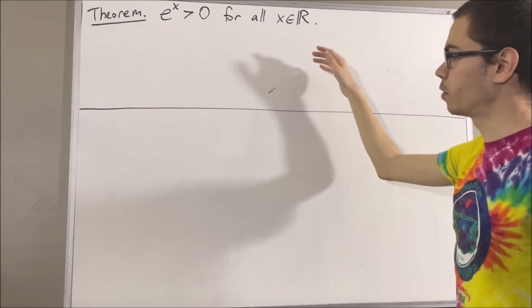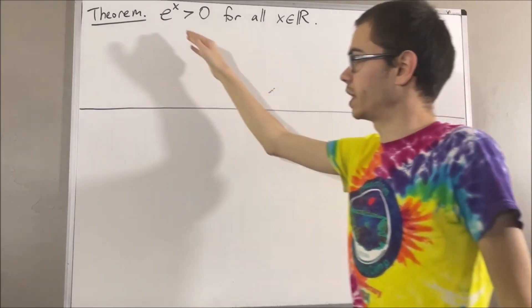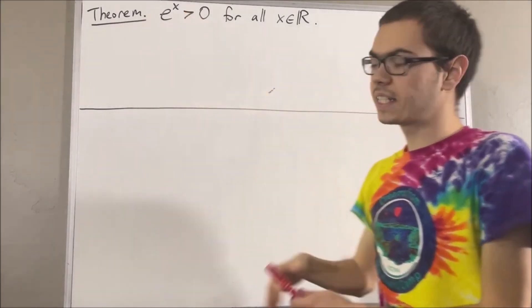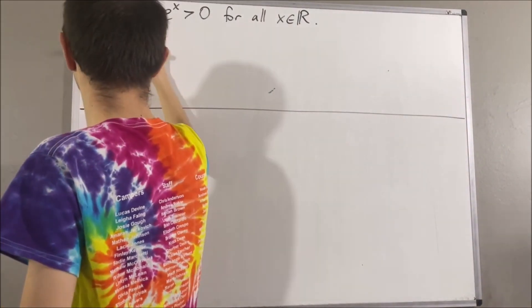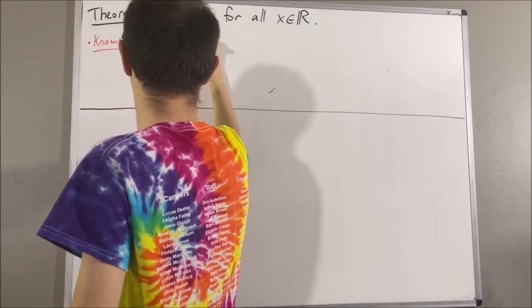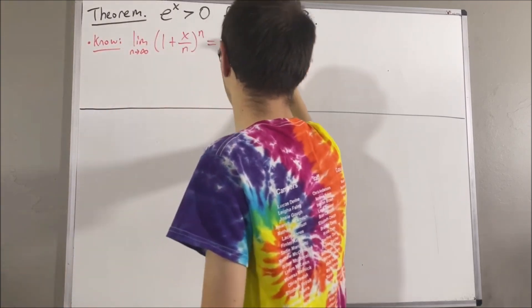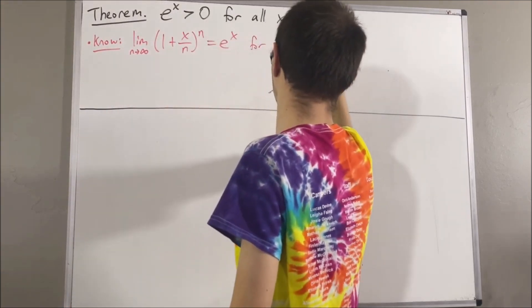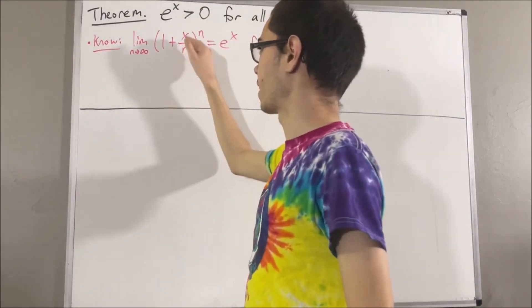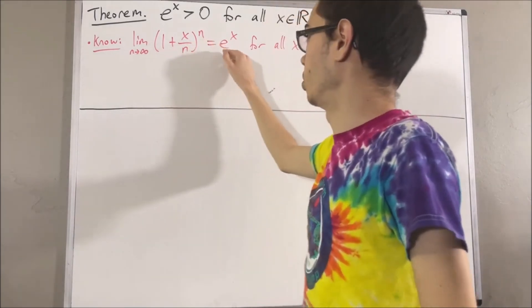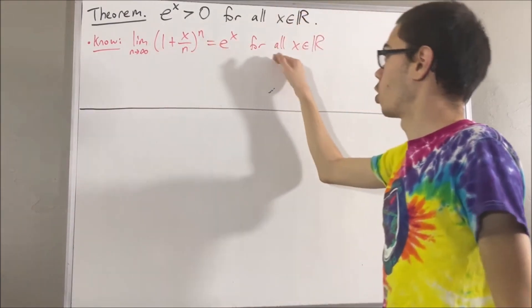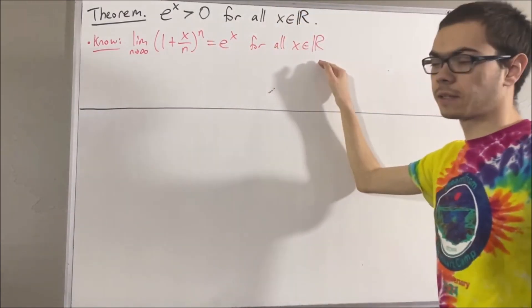First of all, let's remind ourselves what e to the x is. The limit of 1 plus x over n to the power of n is equal to e to the x, for all real numbers x.